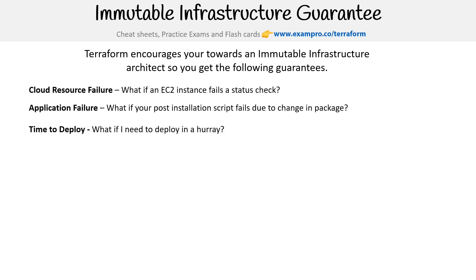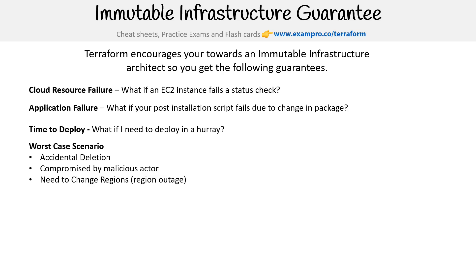What happens when you need to deploy in a hurry? What happens in worst-case scenarios — accidental deletion, compromised by a malicious actor, needing to change regions, maybe a region outage? The real problem is what happens when multiples of these occur at the same time. You have something wrong with your application code and also a region down — you don't want to be dealing with more than one problem at once. That's an issue of agility in terms of deployment.